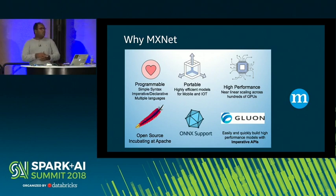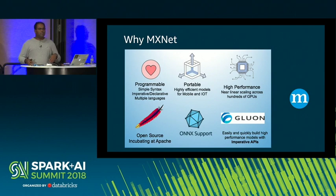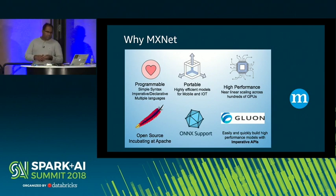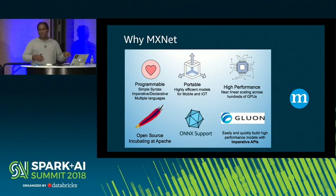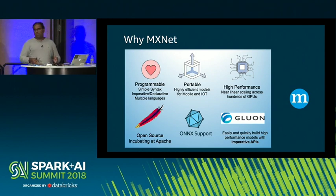There is also the Gluon API — another open source initiative by Amazon and Microsoft to standardize deep learning APIs for ease of use and performance. MXNet not only implements these imperative APIs, but on the back end also optimizes to create a highly optimized symbolic graph. So now you can quickly prototype and not lose any performance.